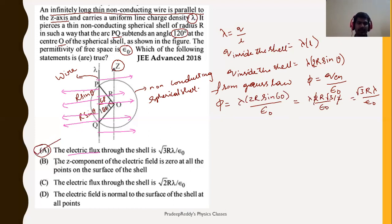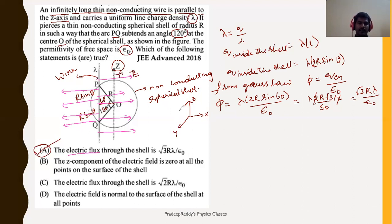Now checking option B. Since the Z direction is upward, the electric field is directed left and right — along the X axis. If we consider Z as up, X as horizontal, and Y as the other axis, then along the Z direction the electric field makes an angle of 90 degrees. Therefore, the Z component of the electric field is zero at all points on the surface of the shell.